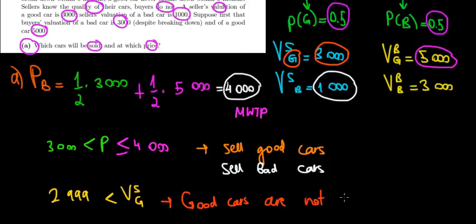Good cars are not sold, so in that case it's inefficient because they would sell only the bad cars. If the price is in this range between 3,000 euros and 4,000 euros, all cars, both good and bad, are going to be sold. Hope this makes sense. In the next video we go to part B.